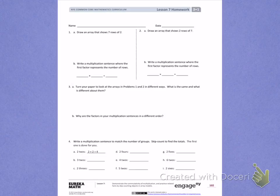Number 1. Draw an array that shows 7 rows of 2. So I need to draw 7 rows with 2 in each row. 1 row of 2, I'm going to label that as 2. 2nd row of 2, which would give me 4.